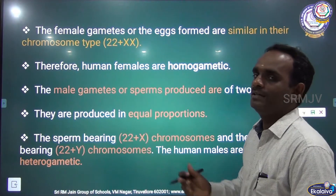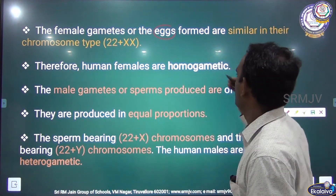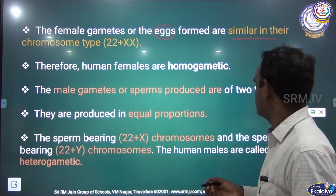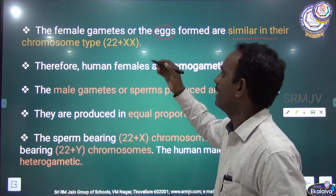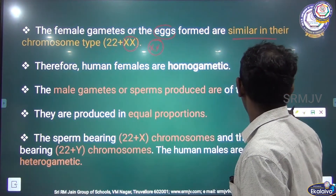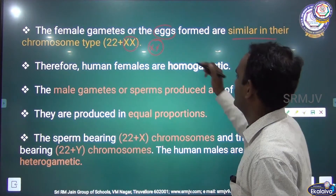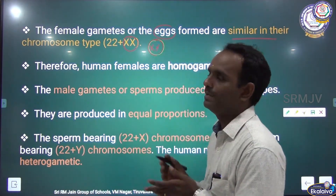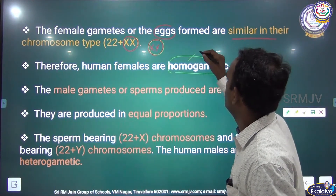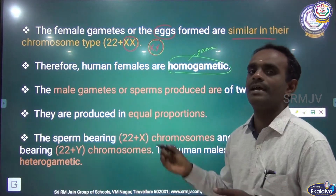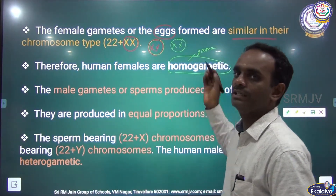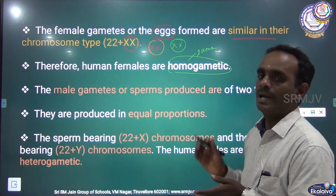The female gametes are similar in their chromosome type. In females, the last 23rd pair chromosomes are similar — XX chromosomes. Therefore, human females are homo gametic. Homo means same — the gametes are the same. XX chromosome type in the 23rd pair; hence females are homo gametic.